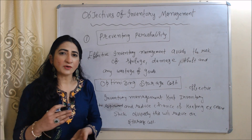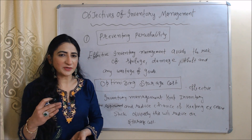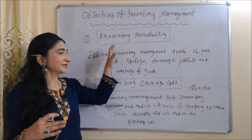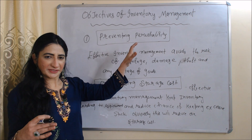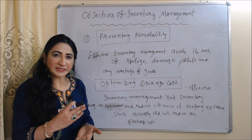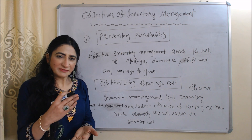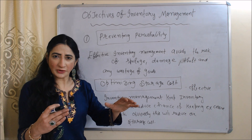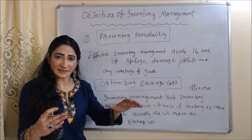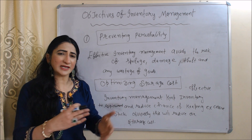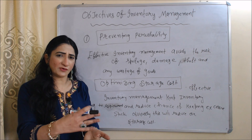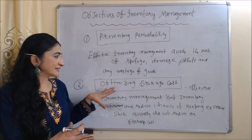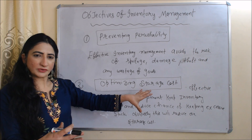Now we will see objectives of inventory management. The first objective is preventing perishability. Effective inventory management helps avoid the risk of spoilage, damage, theft and any wastage of goods.